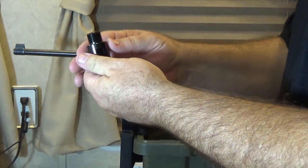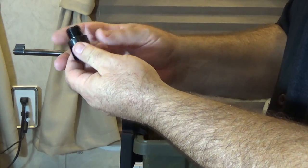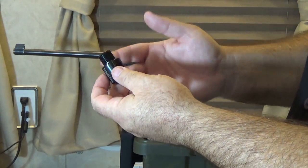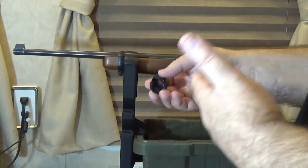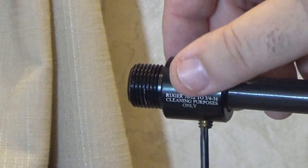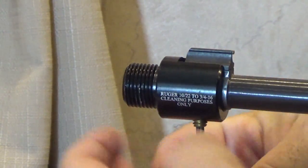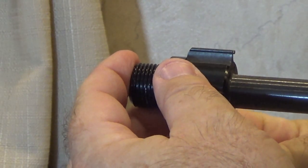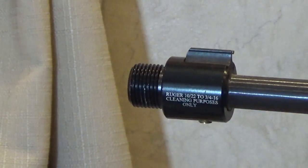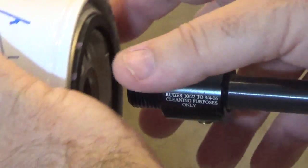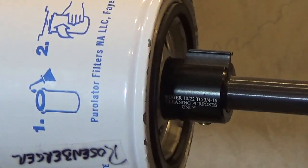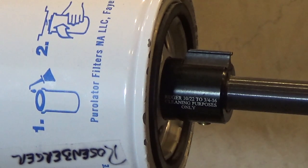This one right here is the barrel thread adapter so that I can put an oil filter on here and turn it into a solvent trap. This is my solvent trap adapter. And this will go on here. And this is what we're going to be using to clean it with. I would adjust this right here to make sure I've got a nice tight fit. That should be more than tight enough. And then what I can do is I can put on my oil filter. And now I can go to town on this.